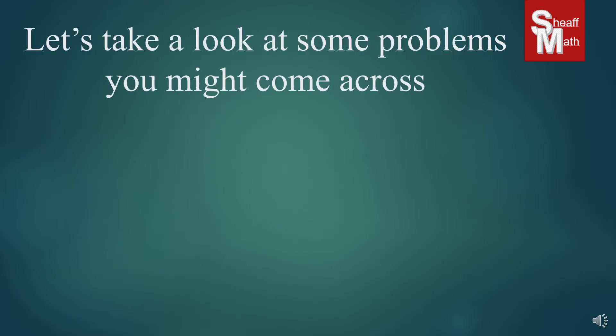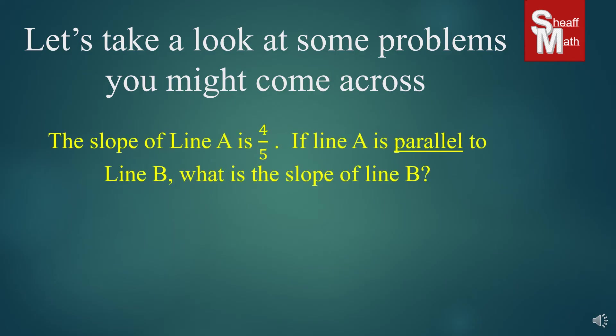Now I'm going to show you a few practice problems. The first one: the slope of line A is 4/5. If line A is parallel to line B, what is the slope of line B? Since parallel lines have the same slope, line B is also 4/5. Pretty easy.